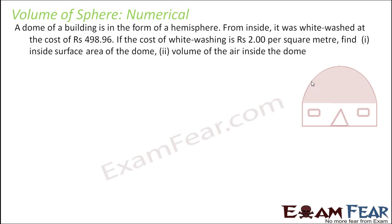A dome of a building is in the form of a hemisphere. From inside it was whitewashed at some cost — a total cost. If the cost of whitewashing per square meter is given, we need to find the inside surface area of the dome and also the volume of the air inside. This is pretty easy — total cost and cost per square meter are both given, so we can easily find the surface area.